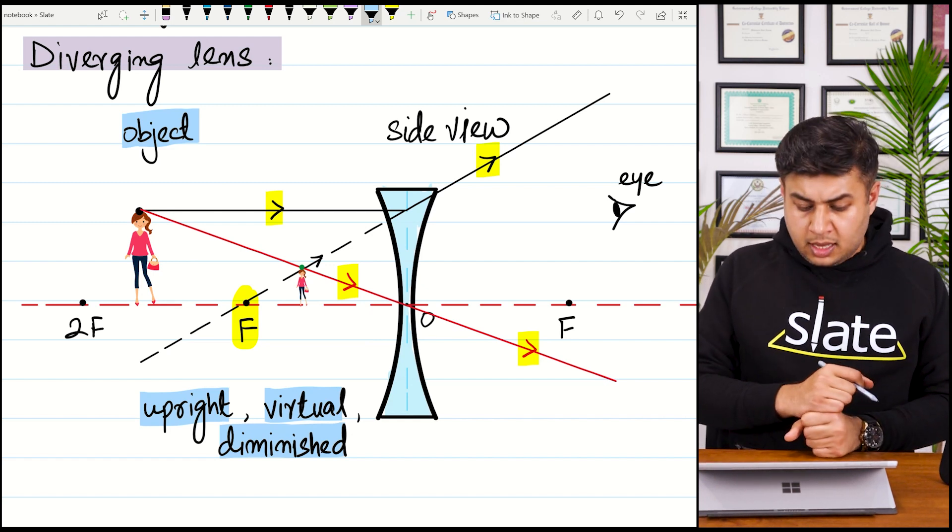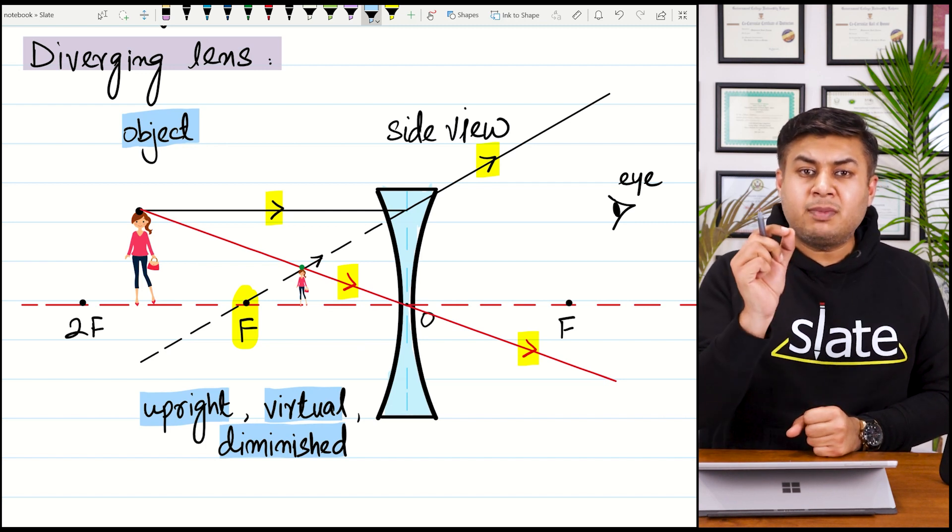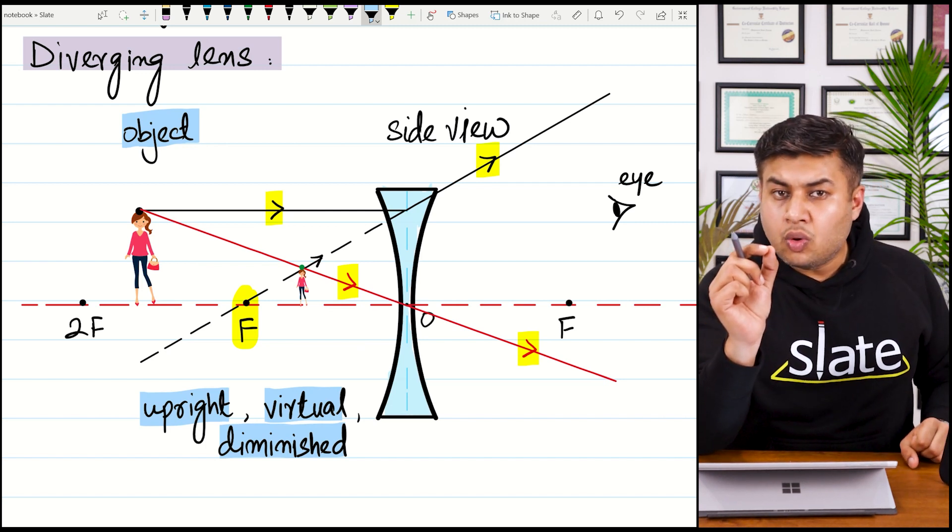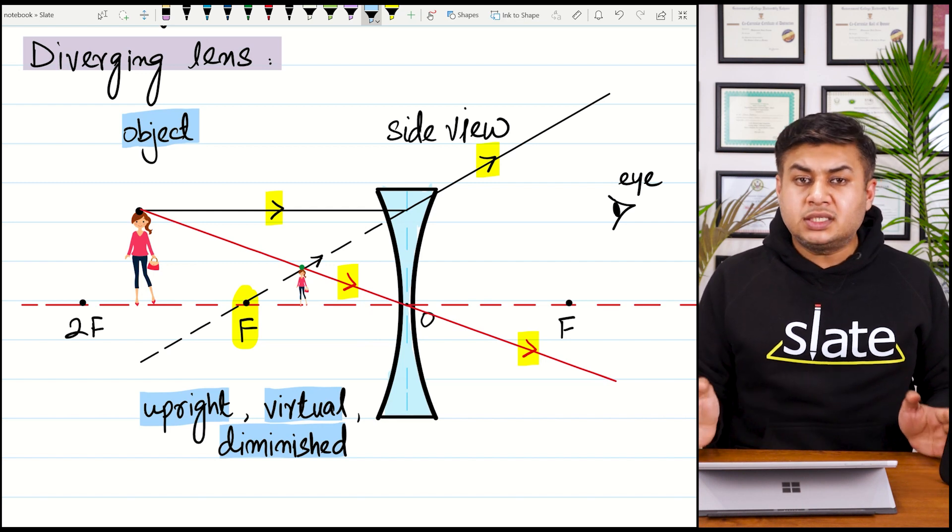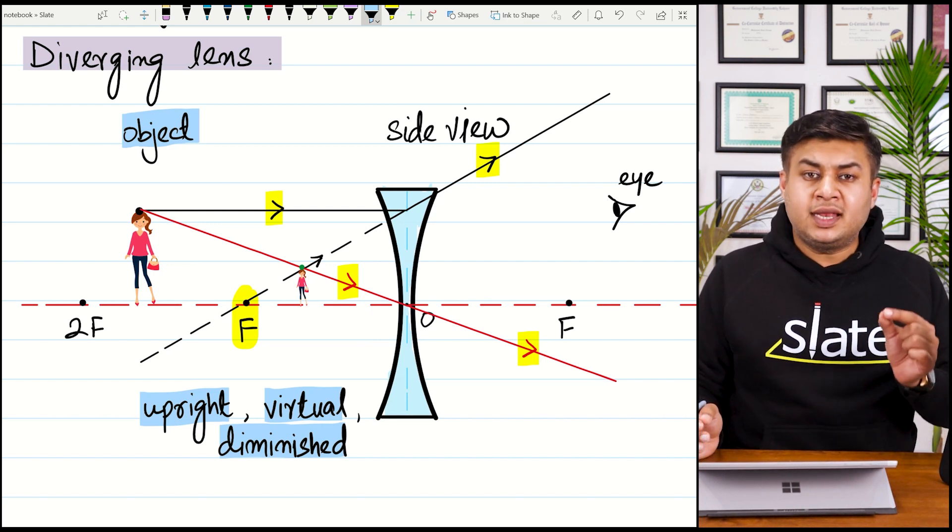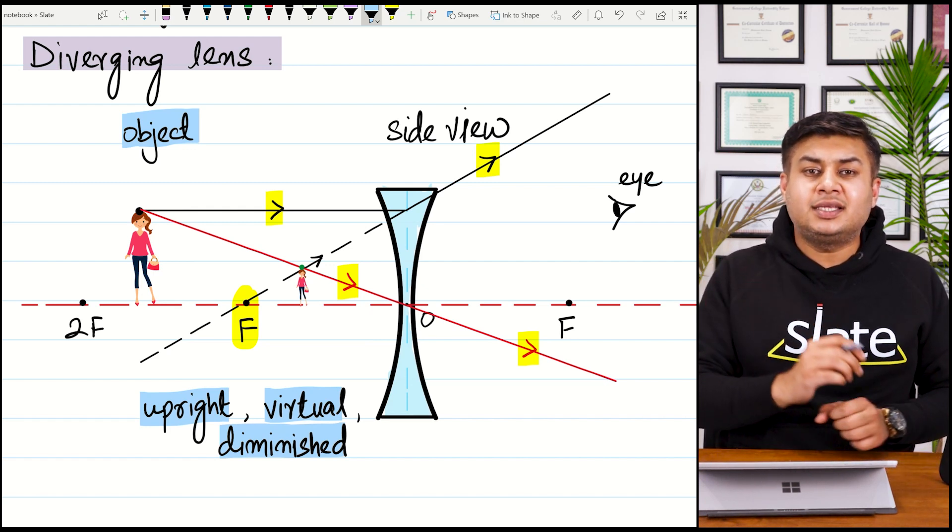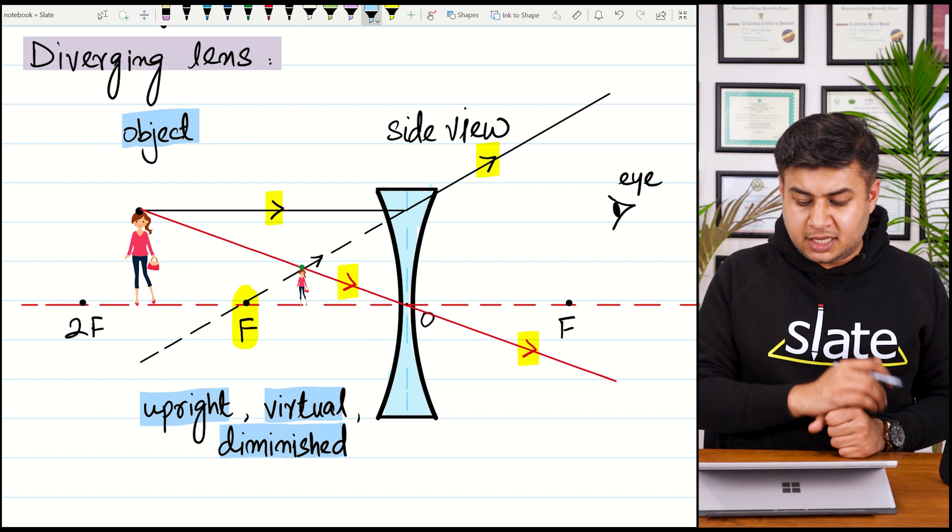What will be the value of linear magnification for this image? The value of linear magnification will be less than one, because when the image is magnified, the linear magnification is greater than one.